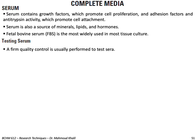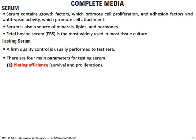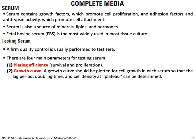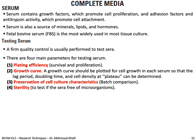There are four main parameters for testing serum: plating efficiency — how well the serum promotes survival and proliferation; growth curve — a growth curve should be plotted for cell growth in each serum so that the lag period, doubling time, and cell density at the plateau can be determined; preservation of cell culture characteristics — you need consistent serum especially between batches to maintain the same quality of cells; and sterility — the serum must be free from microorganisms or contaminants.